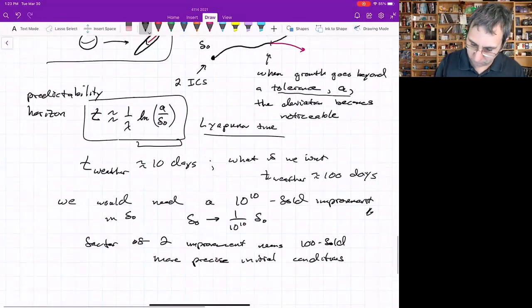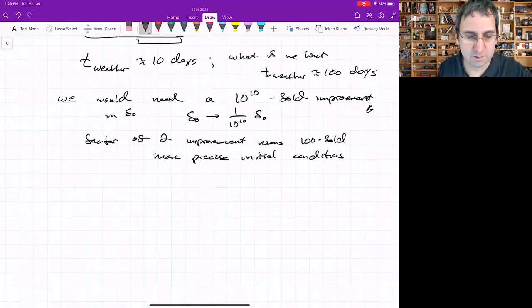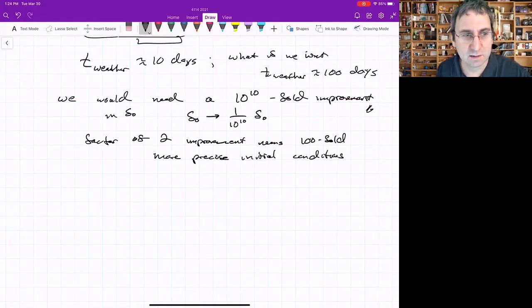So I think we're doing pretty well if we can predict even 10 days. Let's just be happy about that. So that maybe we'll say more about the Lyapunov exponent at some other point. I wanted to define chaos if I could.